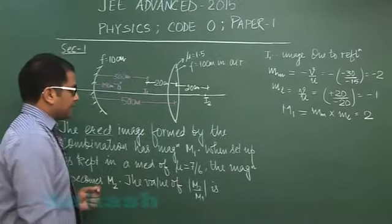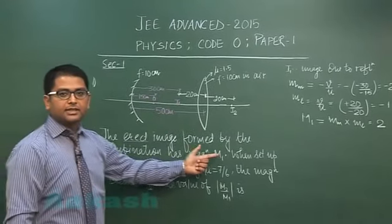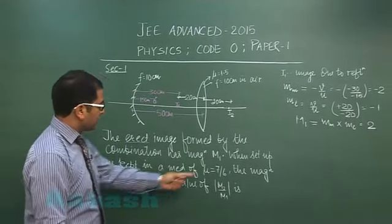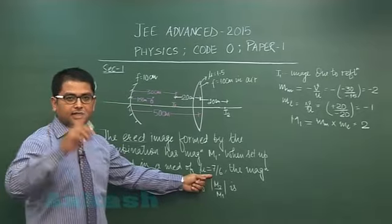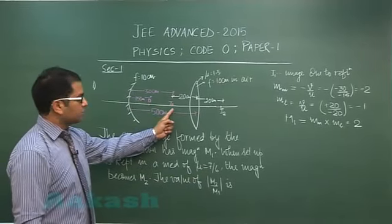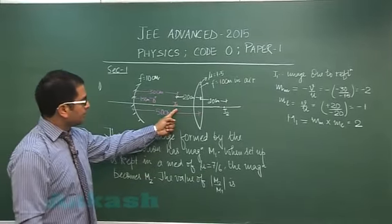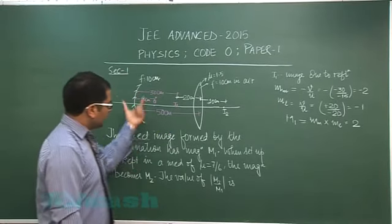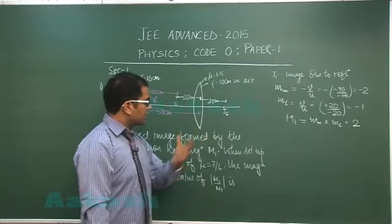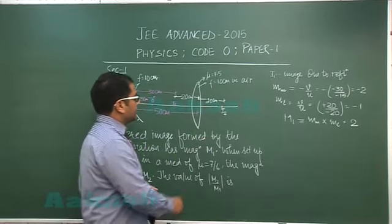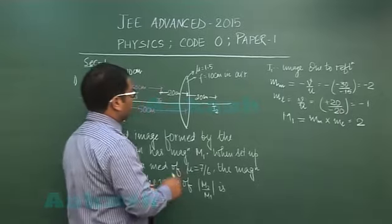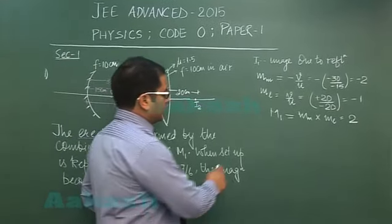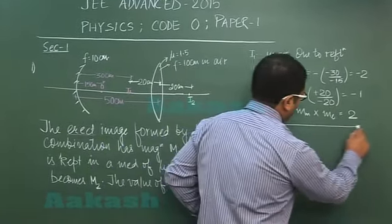Now comes the second case when the whole thing is immersed in liquid of refractive index 7/6. Still the reflection part is not going to change, because reflection is not affected by any value change in refractive index.